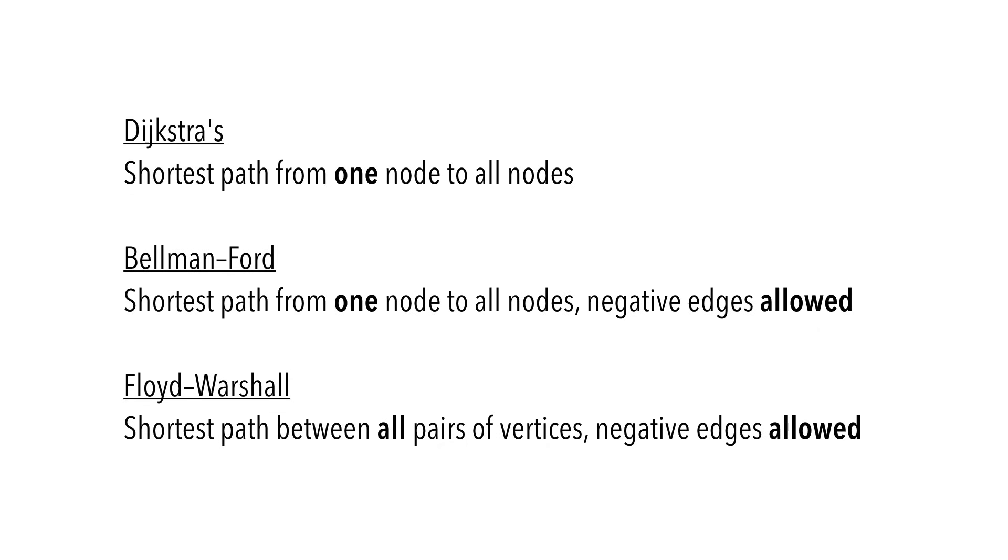Previously, we learned that Dijkstra's provides the shortest path from one node to all nodes. Bellman-Ford is similar, except negative edges are allowed. Floyd-Warshall is different in that it discovers the shortest path between all pairs of vertices. Of course, negative cycles are not allowed in any of these algorithms.